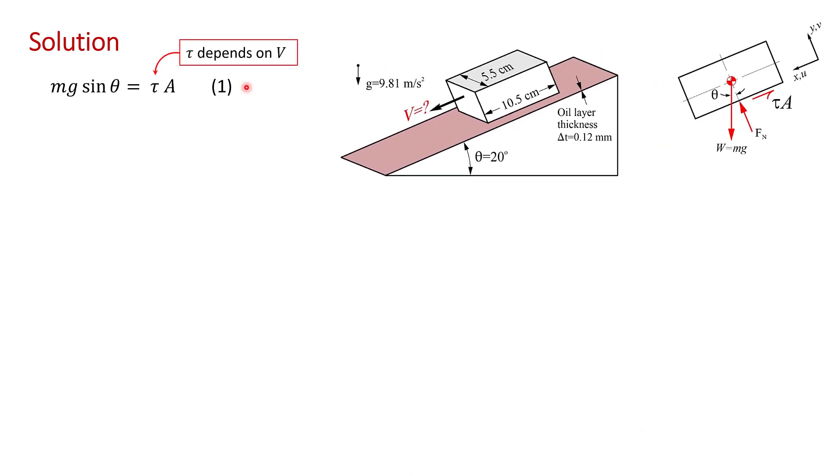So here I've just rewritten that force balance from the previous slide. I'll call that equation one. The key to solving this problem is to realize that the viscous shear stress is related to the sliding speed of the block, V, which is what we're trying to calculate. Newton's law of viscosity relates the shear stress tau to the velocity gradient, du dy. And du dy is the velocity gradient in the thin oil layer.